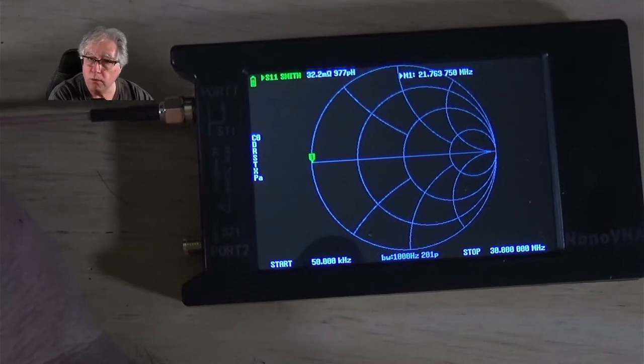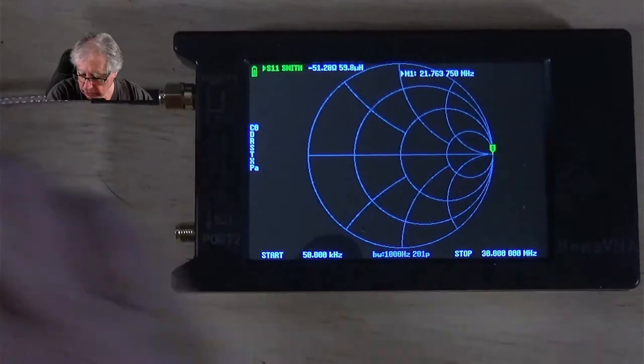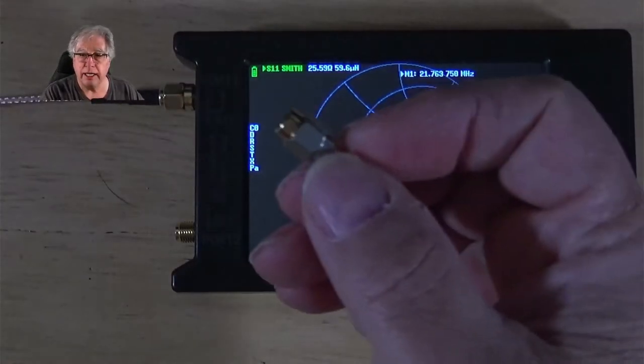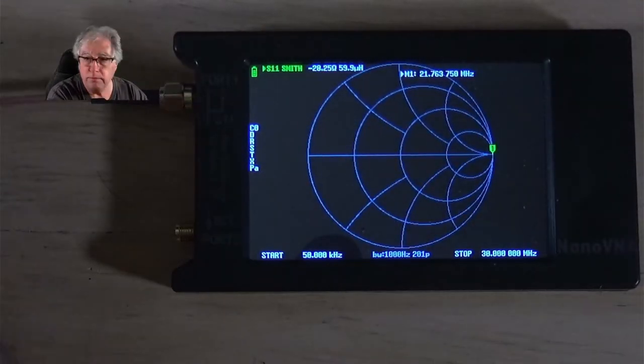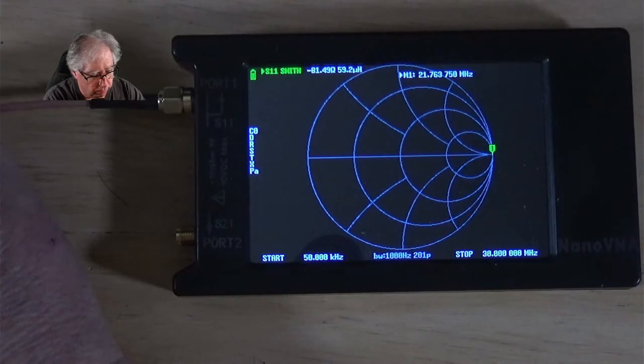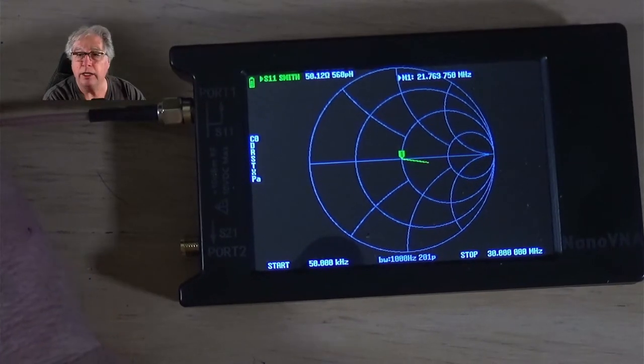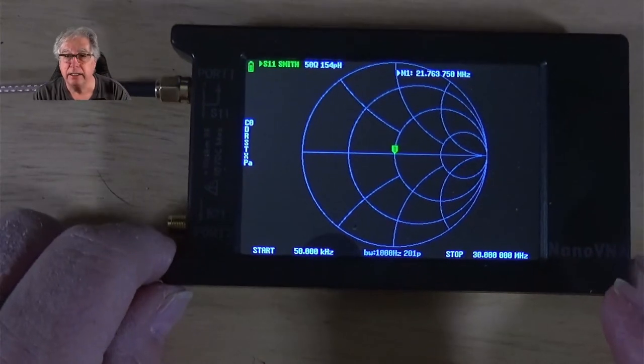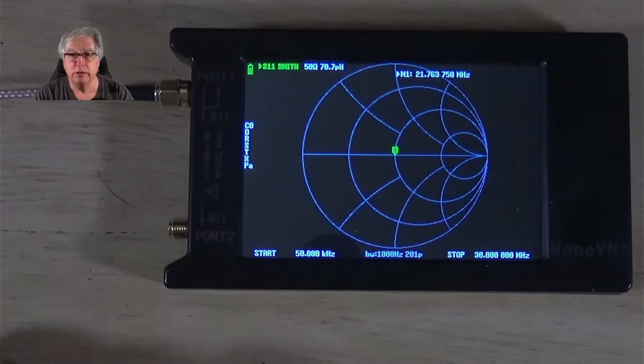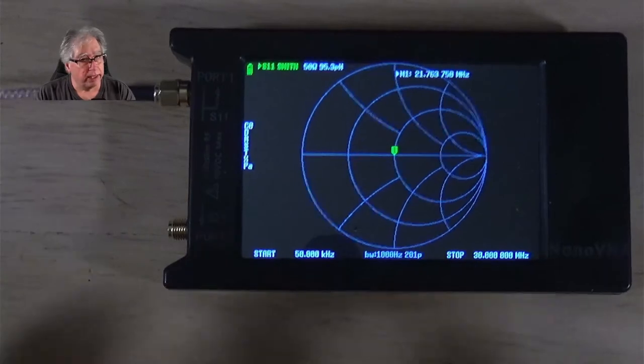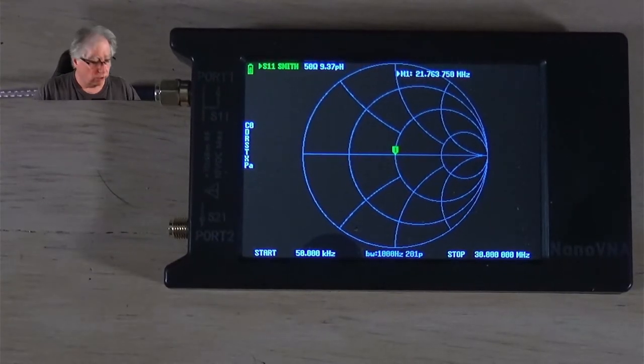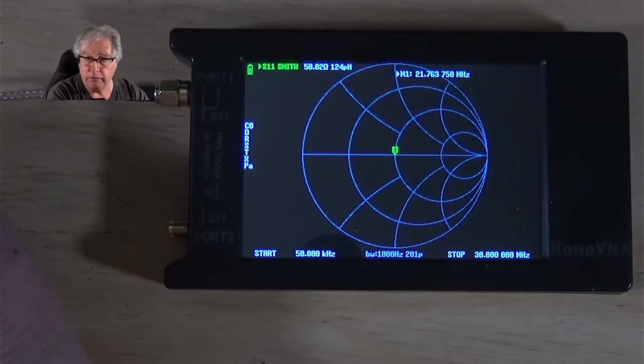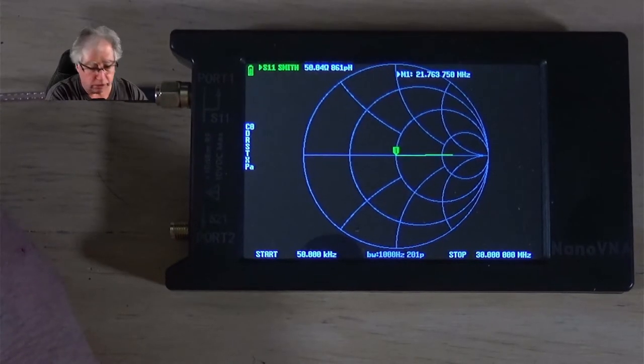And we can look at one more factor here by just sticking a 50 ohm load to see where that sets on our Smith chart as well. And if you notice, it sits there right at the one-to-one. So, with that, we have confirmed that our Smith chart is calibrated fully and our Nano VNA is all set.